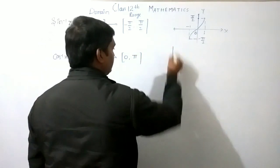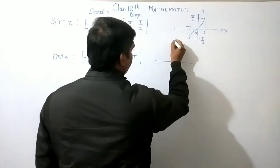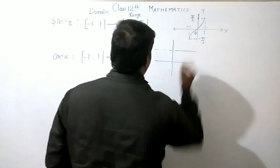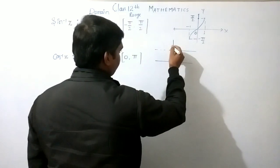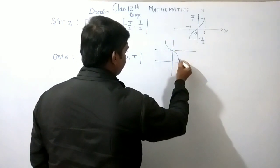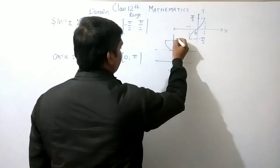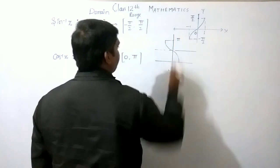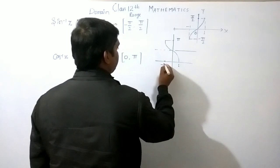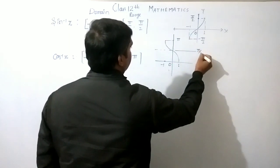Graph: this point is π. This point is 1, this point is -1, 0, and this is π/2.